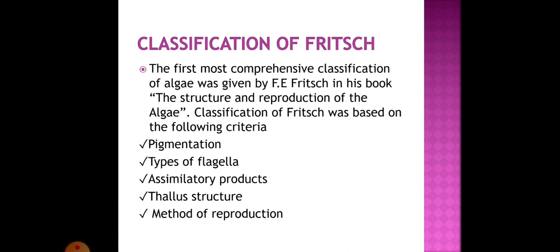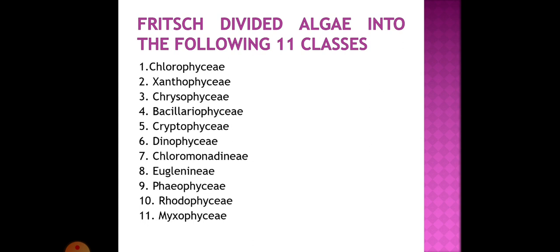Moving on to classification of algae: The first most comprehensive classification of algae was given by F. E. Fritsch in his book 'The Structure and Reproduction of Algae.' Fritsch's classification was based on pigmentation, types of flagella, assimilatory products, thallus structure, and methods of reproduction. Fritsch divided algae into 11 classes.